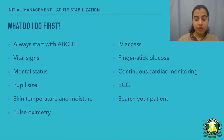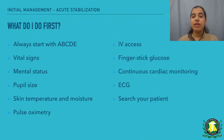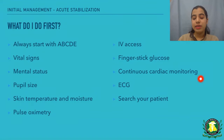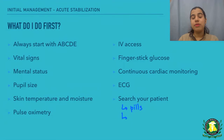Your first approach should be to initially manage the patient, then diagnose the poison, and then manage the poisoning. So first you start with ABCDE — airway, breathing, circulation, disability, and exposure. Make sure your patient is stable. Take the vital signs, check mental status, pupil size, skin temperature and moisture, check pulse oximetry, get IV access, check finger-stick glucose, do continuous cardiac monitoring, get an ECG, and also search your patient — sometimes they might have the drug on them or there may be other signs you can catch.